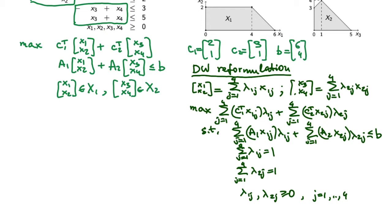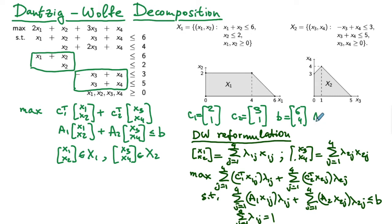The matrices A1 and A2 are submatrices of the complicating constraints. A1 corresponds to variables x1 and x2 and is given by [[1, 1], [0, 1]]. A2 corresponds to variables x3 and x4 and is given by [[1, 1], [2, 1]].